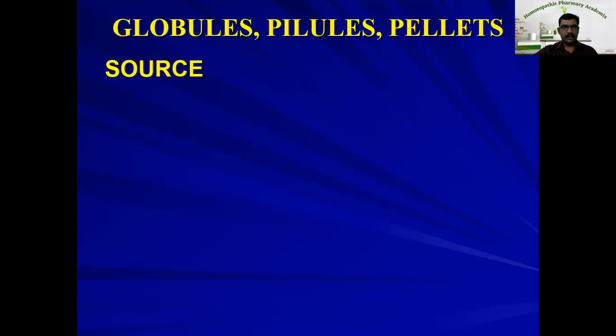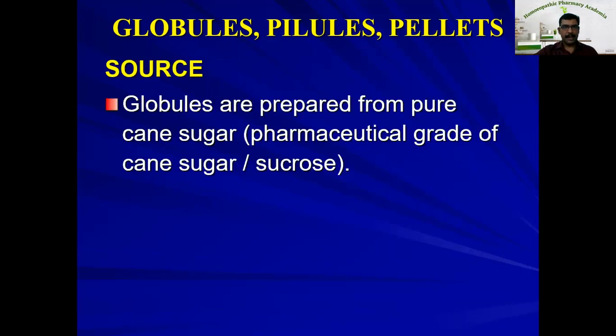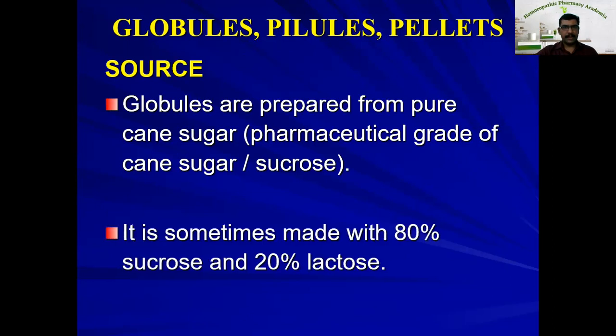Now let us see the preparation of globules or pellets. In homeopathy, the smaller ones are generally called globules and the bigger ones are called pellets. Globules are prepared from pure pharmaceutical-grade cane sugar or sucrose, and are sometimes made with 80% sucrose and 20% lactose.